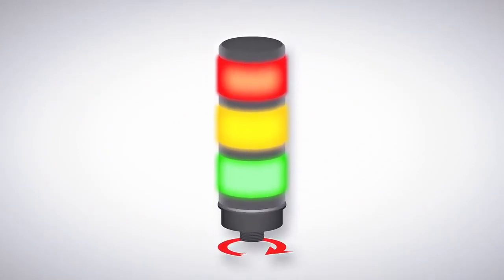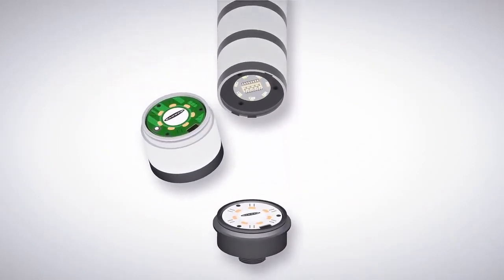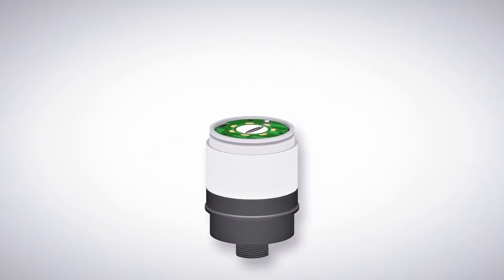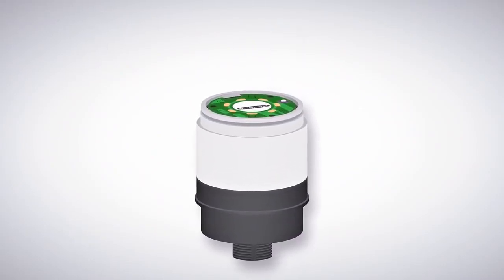Installation is fast and easy. Simply twist off the bottom of your existing TL70 and attach the communication segment to the base. Bind to the network and reassemble.